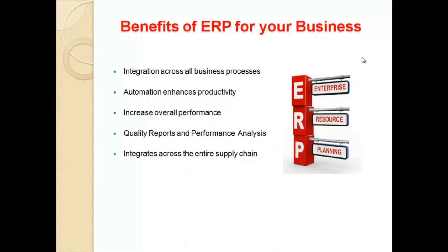Automation also frees up people from maintenance tasks such as balancing data. The third benefit is increased overall performance — by integrating disparate business processes, ERP ensures coherence and avoids duplication, discontinuity, and people working at cross purposes in different parts of the organization. The cumulative positive effect when business processes integrate well is overall superior performance by the organization.